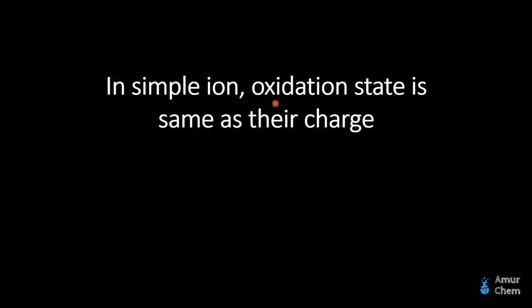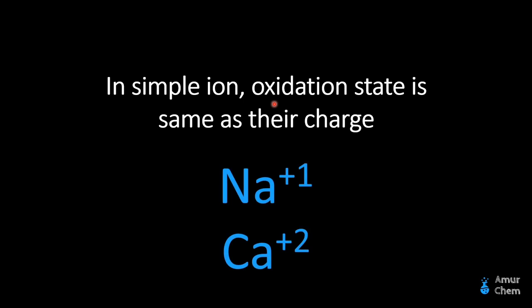Rule 2: in a simple ion, the oxidation state is the same as its charge. For example, sodium ion and calcium ion. Sodium belongs to Group 1A, so it loses its single valence electron to form a positive 1 charge — a Na⁺ ion. Calcium belongs to Group 2A, loses its two electrons, forms a dipositive cation, and acquires an oxidation state of positive 2.